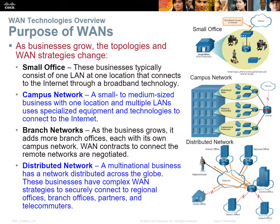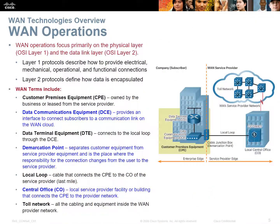Let's look at the actual operations of a WAN. WAN standards always operate at Layer 1 and Layer 2 of the OSI model — there is no Layer 3 WAN standard. You've got your customer premises equipment, your data communications equipment typically on the ISP side, and your data terminal equipment which is your stuff.